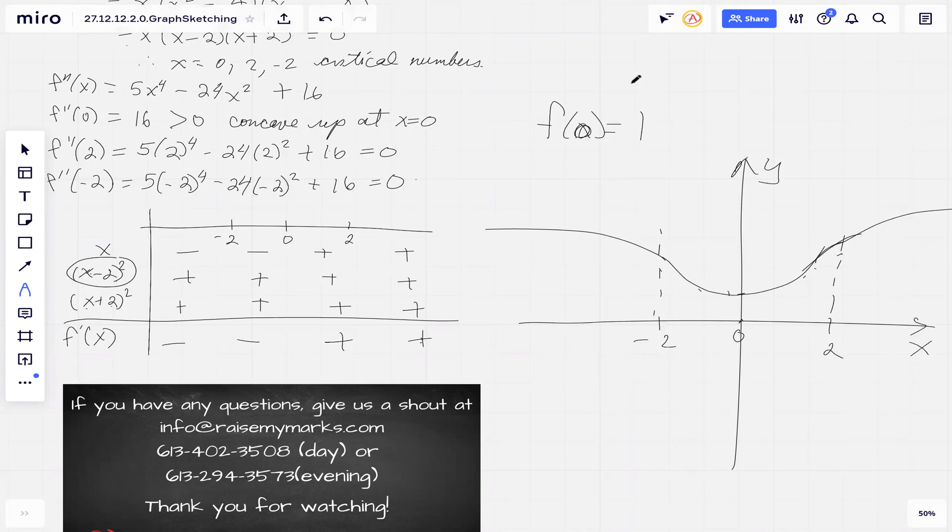Excellent. We've sketched our function and we used some of the properties of derivatives and tests using the first and second derivatives, then looking at this chart for the sign of the derivative on different intervals to give us an idea of what's happening in our function and how it's changing. Then finally we can sketch our graph.